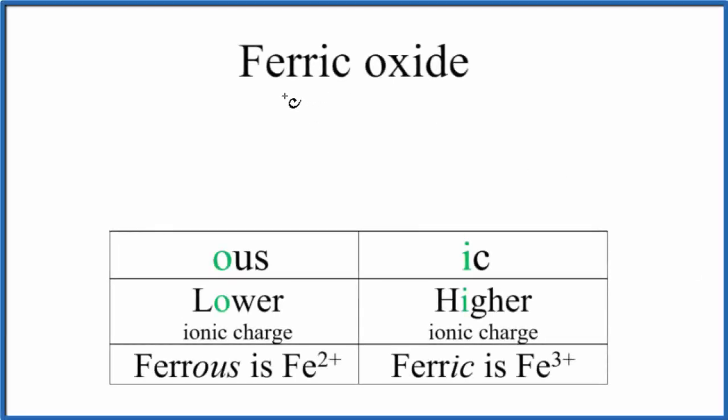In this video, we'll write the formula for ferric oxide. Ferric oxide uses an older naming system called the stock naming system. In that system, if it ends in 'ous', that's the lower ionic charge.